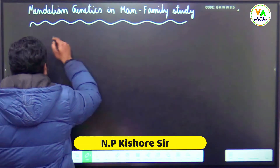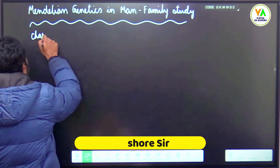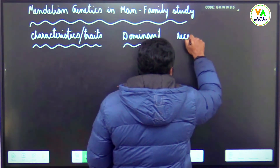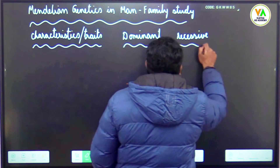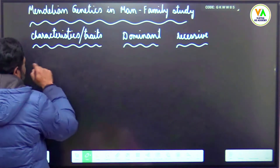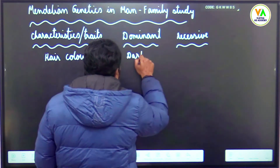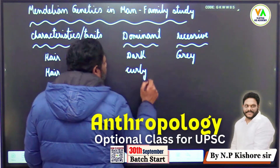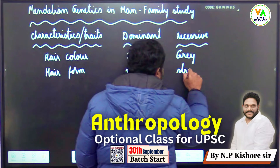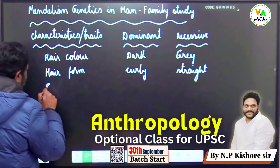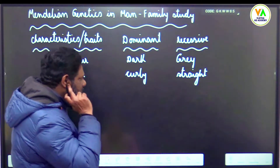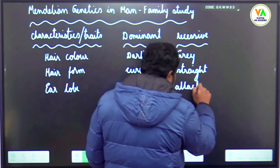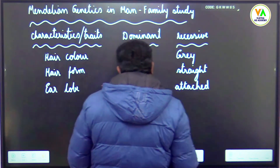In human beings, certain characteristics or traits are found to be dominant and certain characteristics are found to be recessive. For example, hair color is dominant over grey hair. Hair form — curly hair is dominant over straight hair. Likewise, ear lobe: this is free ear lobe; if it is attached here, then it is attached ear lobe. Free ear lobe was found to be dominant over attached ear lobe.